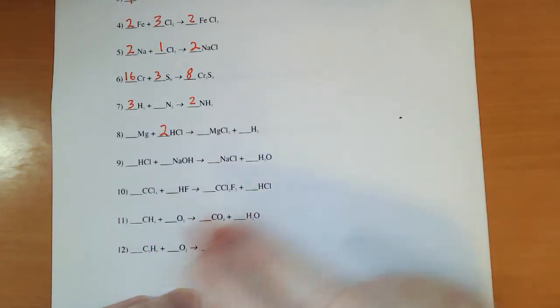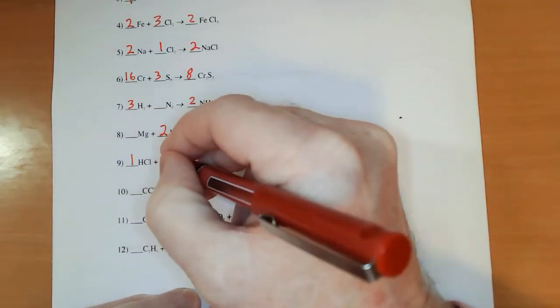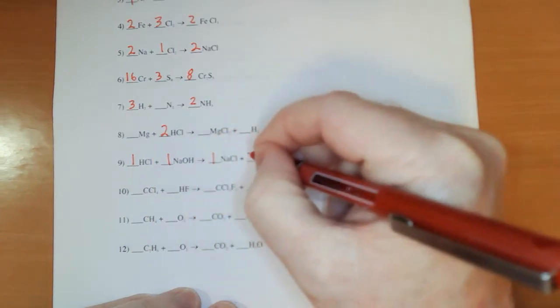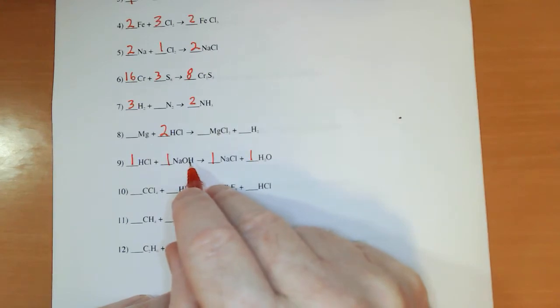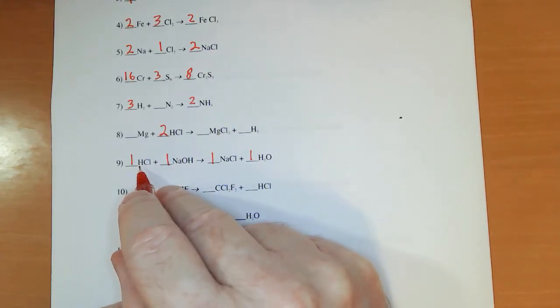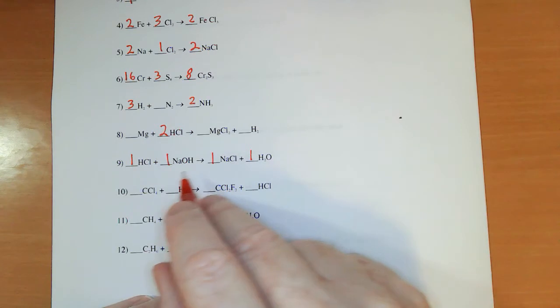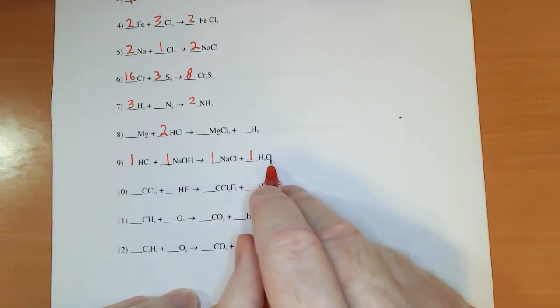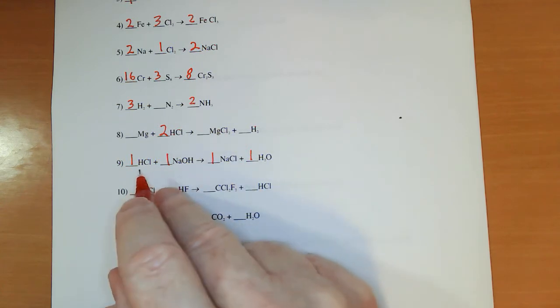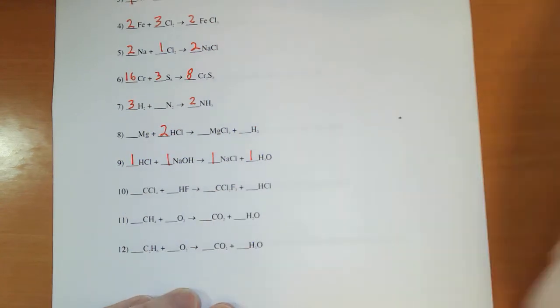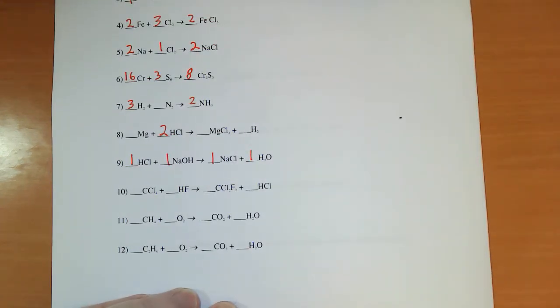This might be the hardest one on the entire assignment to balance. The answers are all ones. It was already balanced. And people keep trying to figure out, how does that work? Well, you see, you got a hydrogen here and a hydrogen there. That makes two. There's two of them there. One oxygen here, one oxygen here, one sodium here, one sodium there, one chloride here, one chloride there.